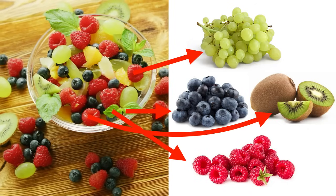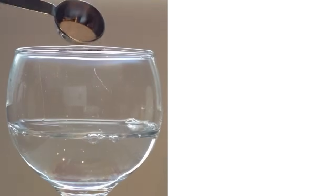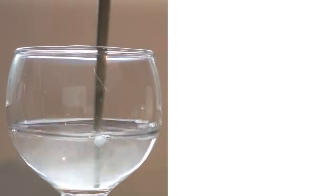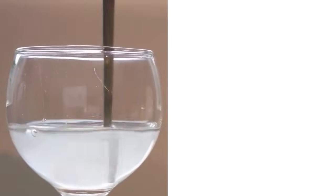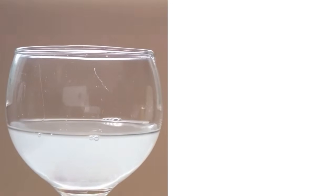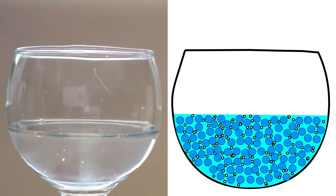Now there's one more type of mixture — it's called a solution. A solution is a mixture where substances are spread out evenly. The best example is to think about putting a spoonful of salt into water. If you put the salt into the water and stir, the salt dissolves, making it look like it isn't there anymore. But what's actually happening is that the particles of salt are spreading out evenly among the water.